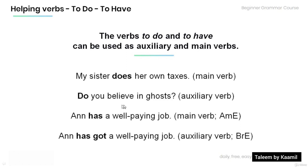In the sentence 'Ann has a well-paying job,' the verb 'has' is used as the main verb. And in 'Ann has got a well-paying job,' 'has got' is used as an auxiliary verb.